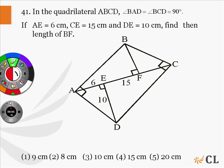In the quadrilateral ABCD, angle BAD equals angle BCD equals 90 degrees. AE equals 6 cm, CE equals 15 cm, and DE equals 10 cm. Find the length of BF.